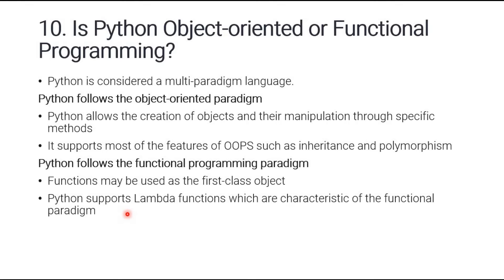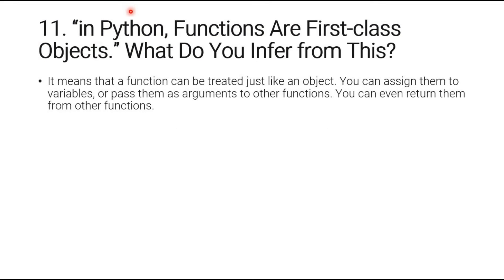Question number ten: is Python object-oriented or functional programming? Python is considered a multi-paradigm language — it follows both the object-oriented paradigm and the functional programming paradigm. Python allows the creation of objects and their manipulation through specific methods, and supports OOP features such as inheritance and polymorphism. For functional programming, functions can be used as first-class objects, and Python supports lambda functions, which are a characteristic of the functional paradigm.